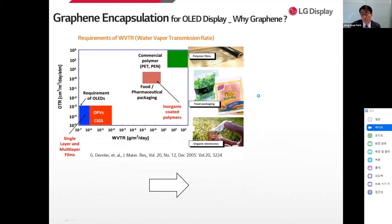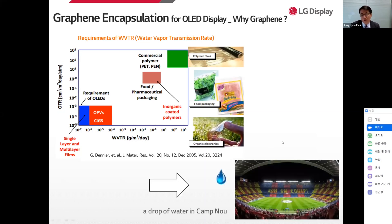WVTR, water vapor transmission rate, has been widely used as a quantitative measure of barrier property. In order to apply the encapsulation structure to the OLED display, a single layer or multi-layer film of about 10⁻⁶ g/m²/day is required. This value is equivalent to passing only one drop of water per day in the area of Camp Nou, Barcelona's soccer home stadium.